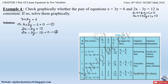From Equations 1 and 2 we identify the coefficients: a₁ = 1, b₁ = 3, c₁ = −6 from the first equation, and a₂ = 2, b₂ = −3, c₂ = −12 from the second equation.